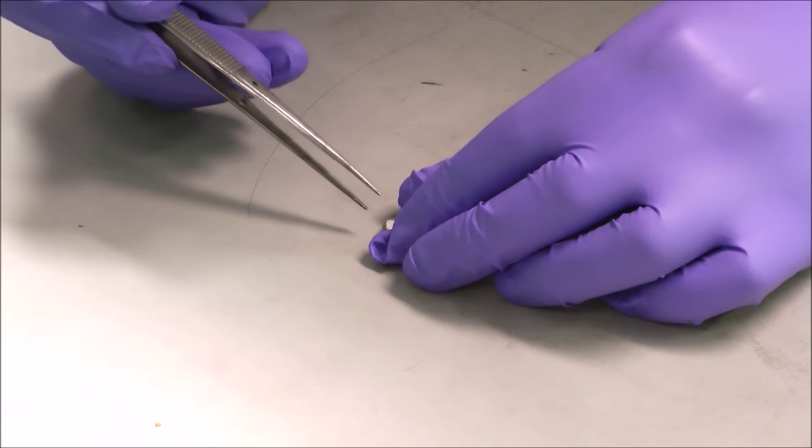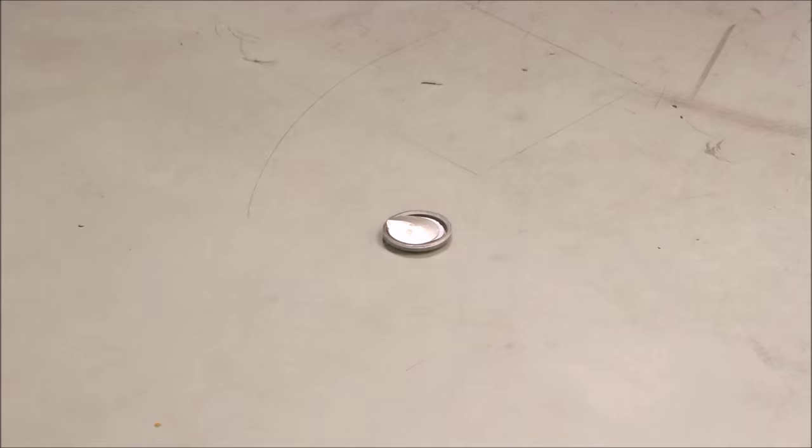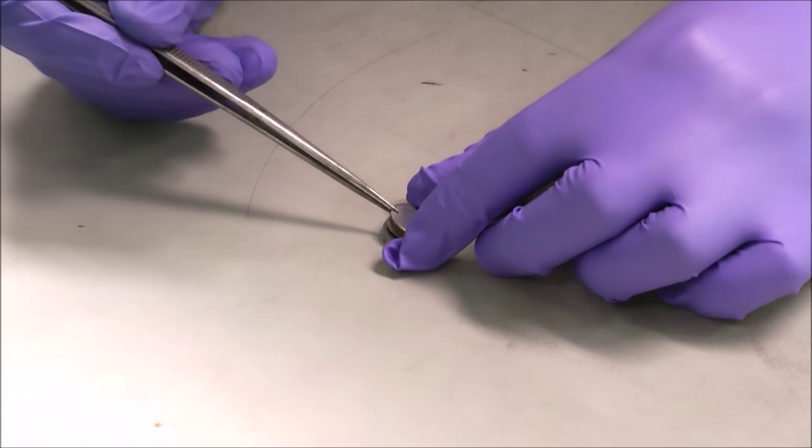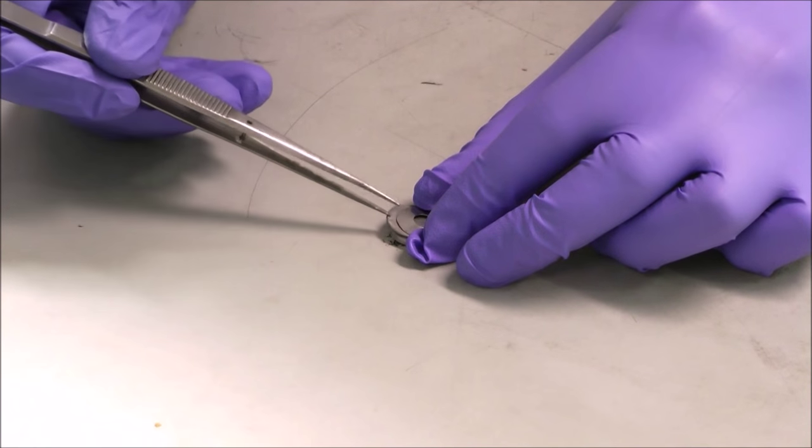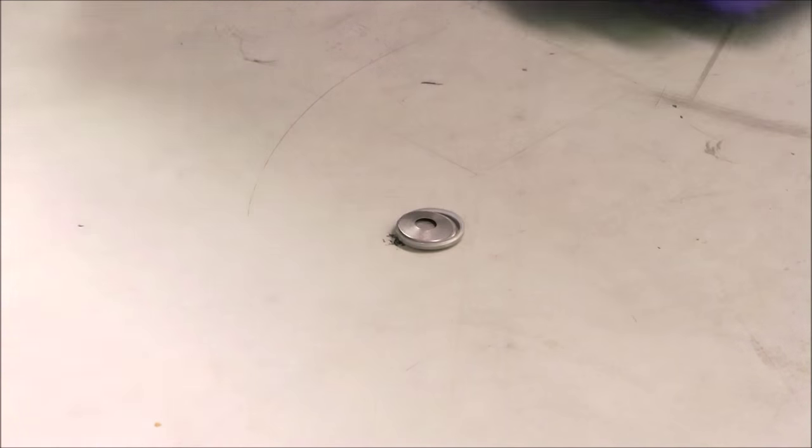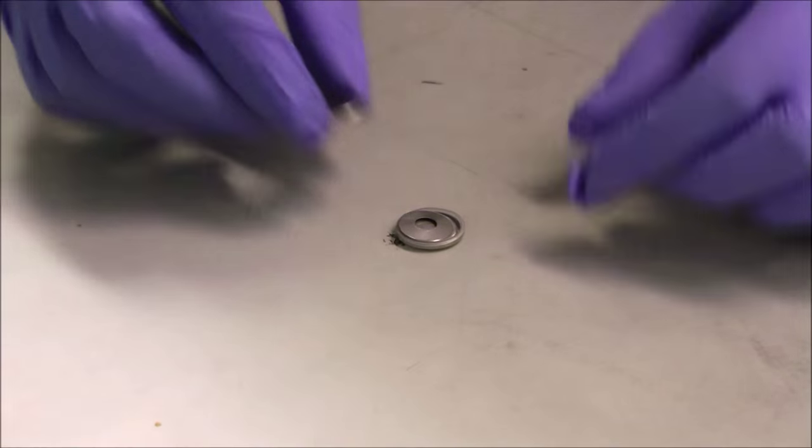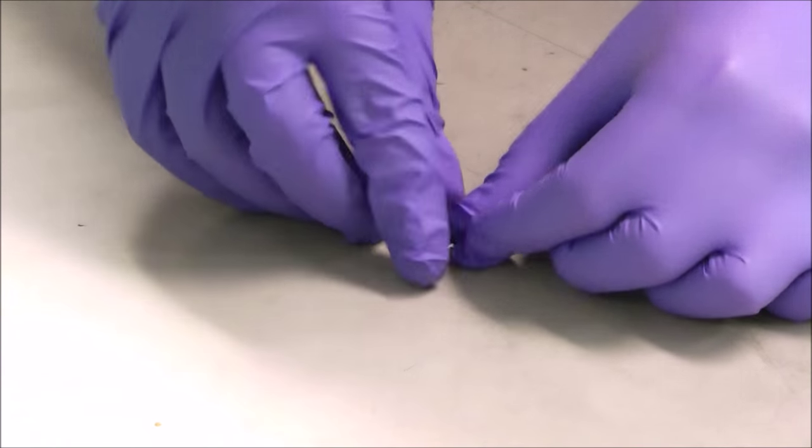The other electrode is then placed on top, followed by another spacer. A stainless steel spring is then added to further aid the compression and thus increase the contact between the components. The top half of the coin cell case is then placed, enclosing all the coin cell components.